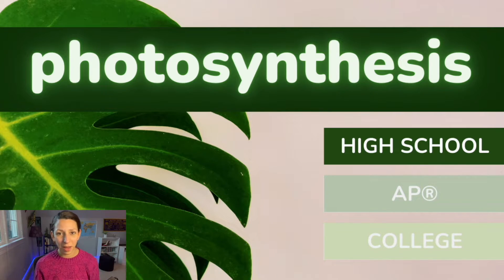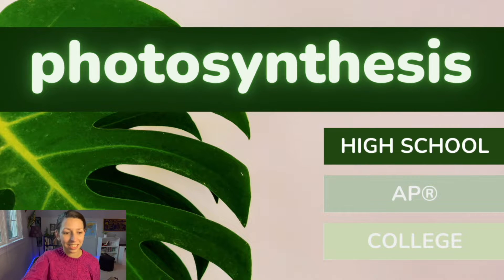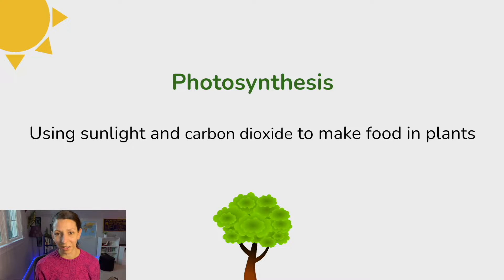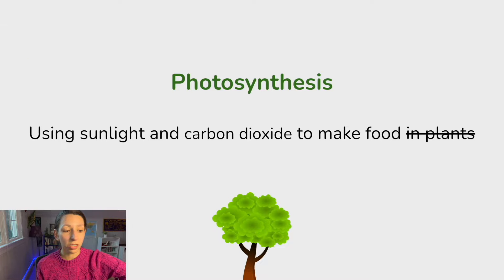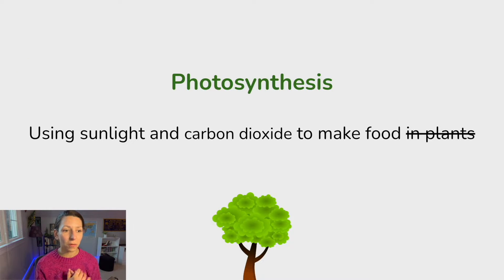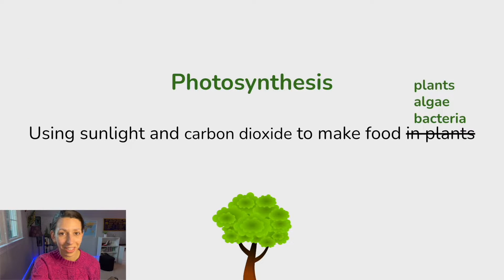Let's get started with high school level biology and what photosynthesis is. You might have learned in middle school or at another time that photosynthesis is the process of using sunlight and carbon dioxide to make food in plants. In high school, we're going to get a little bit more specific, because we know not only plants do photosynthesis, but also algae and some bacteria.